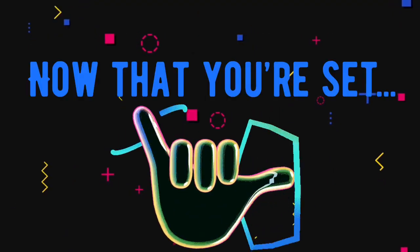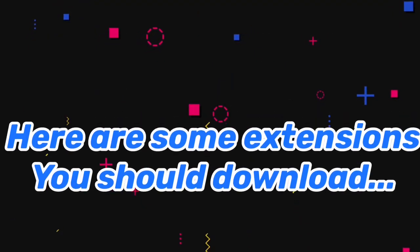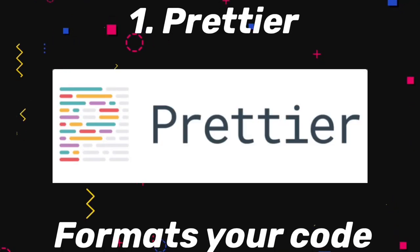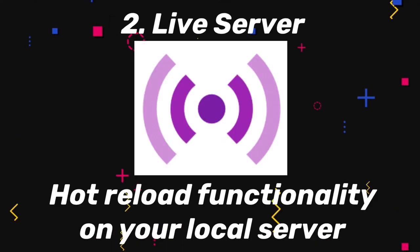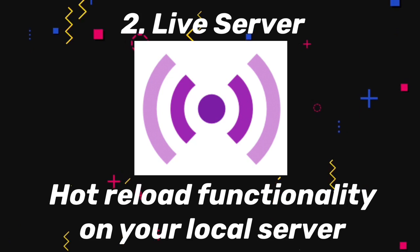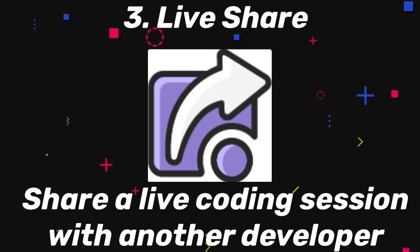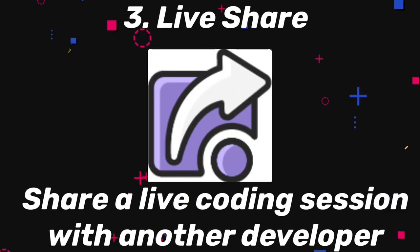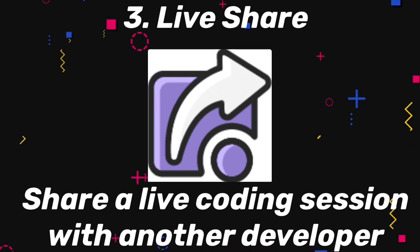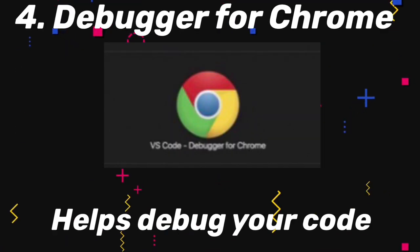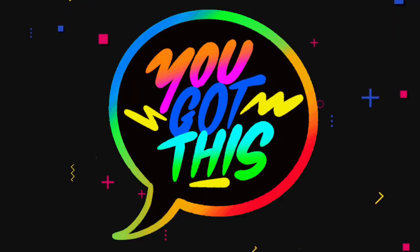Once you're all set, here's a couple extensions you should download. Number one, Prettier, which formats your code. Number two, Live Server — hot reload functionality on your local server. Number three, Live Share — you can share a live coding session with another developer. Number four, Debugger for Chrome, which helps you debug your code. That is it guys.